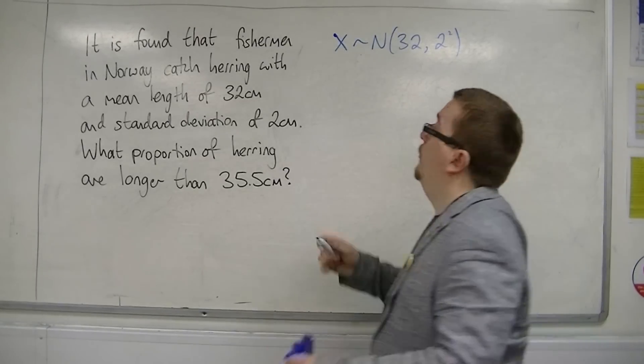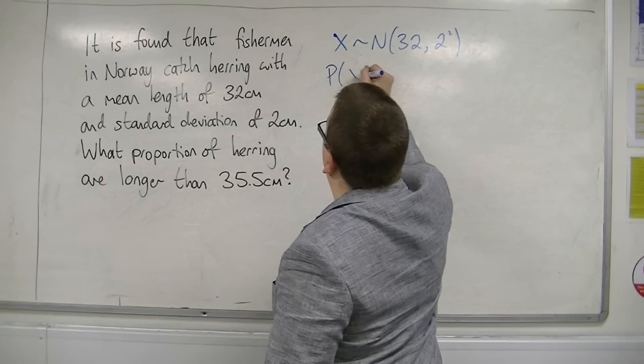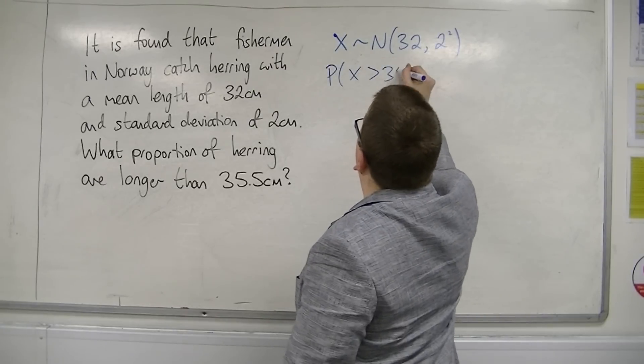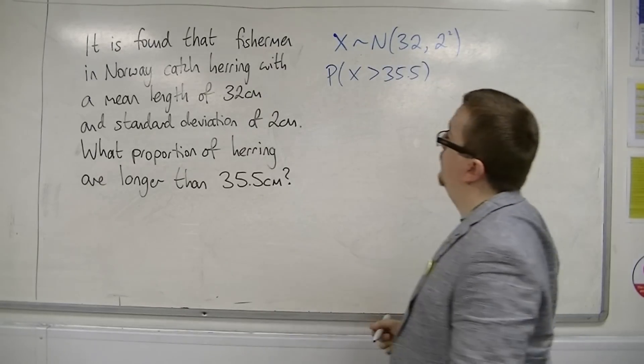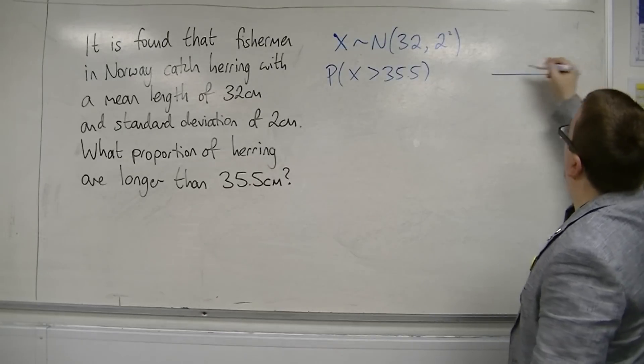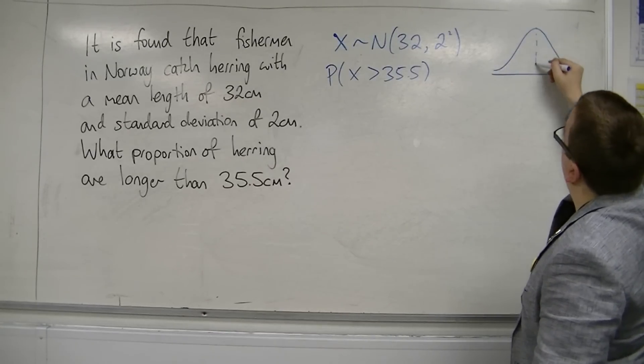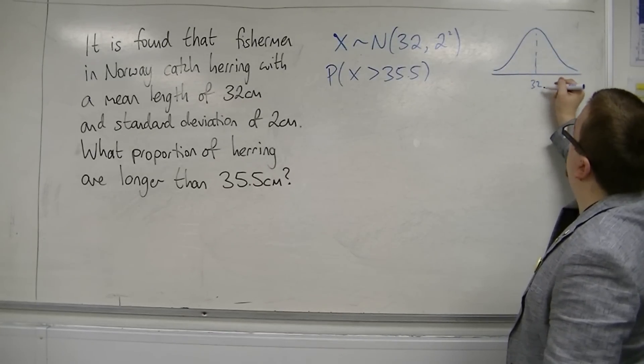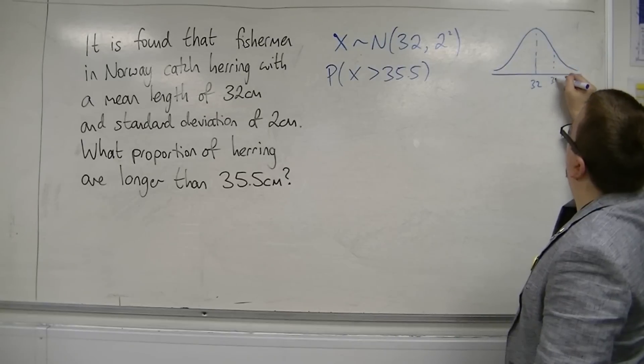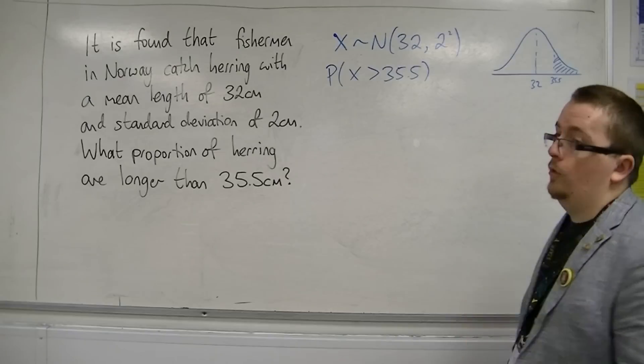We want to find the probability that x is greater than 35.5. Now, on our bell curve, what we're looking at is the mean of 32 and 35.5 is over here. So we want more than that, we want this proportion.